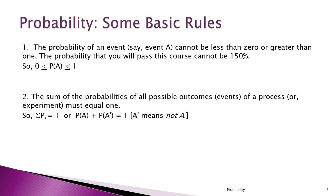Rule two: the sum of the probabilities of all possible outcomes of a particular process must equal one. The probability of A and the probability of everything that's not A together must equal one. The probability of getting a one, two, three, four, five, or six on a die — those are all possible values — must add up to 100% or one.